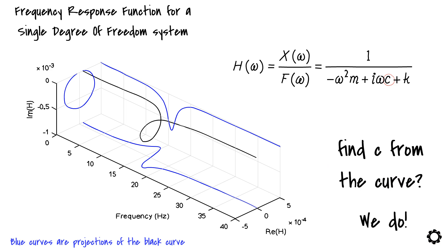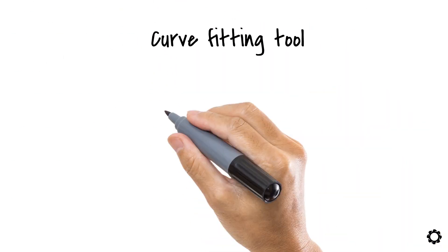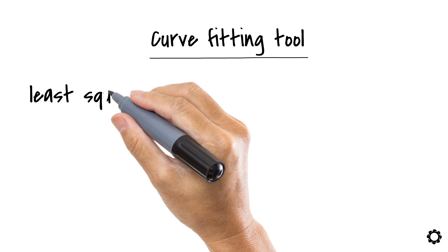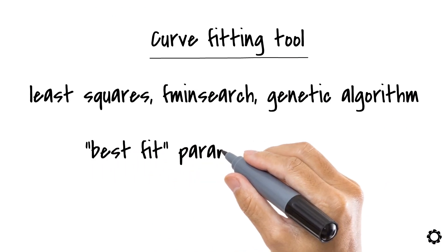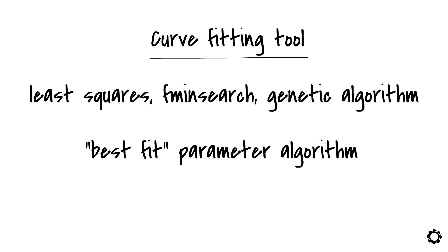We can use any sort of curve fitting tool for this situation such as least squares, fmin search, genetic algorithm and so on. Combining the curve fitting technique with the available graph we can find the best fit parameter which satisfy the theoretical equation.